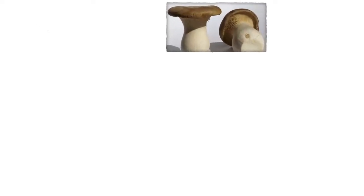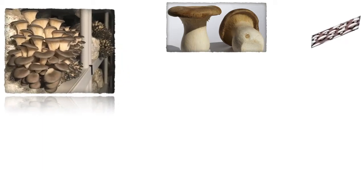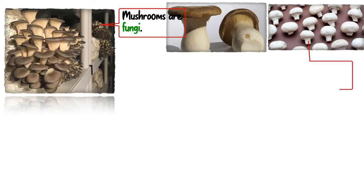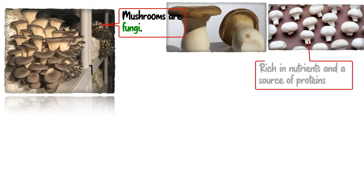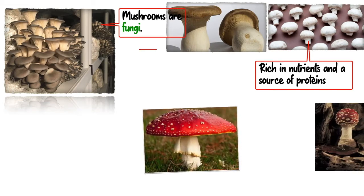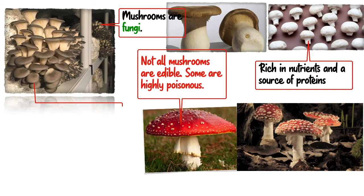As you have learnt, mushrooms are fungi — they are edible fungi. Edible means that they can be eaten. Mushrooms are rich in nutrients; they are a great source of proteins and vitamins. It is important to note that not all mushrooms are edible — some are highly poisonous. The kinds of mushrooms that are edible include butter mushrooms and oyster mushrooms. Find out from your family members or community whether farmers in your area grow mushrooms, and request an adult to arrange a visit to a mushroom farm.